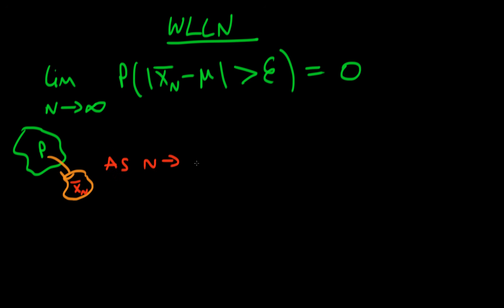Then as I increase my sample size, so as I let n the size of my sample tend to infinity, then my sample mean x̄ₙ tends to the population mean μ.